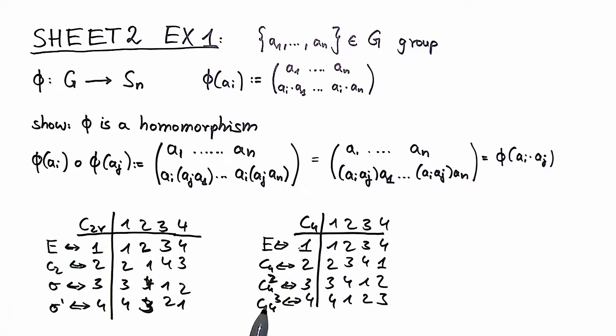If we have for example phi of c2, phi of c2 is now given by these two lines. The permutation of these four elements to a permutation of these four elements. You can extract that out of the definition over here.